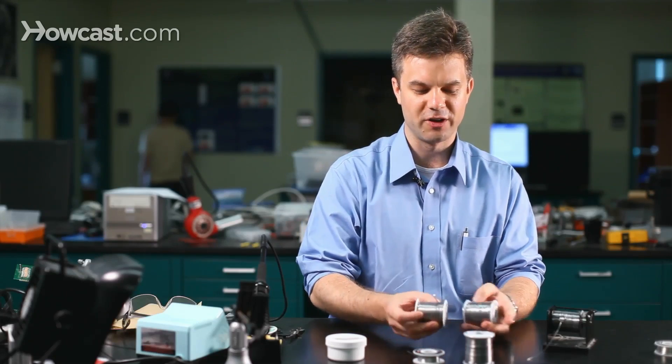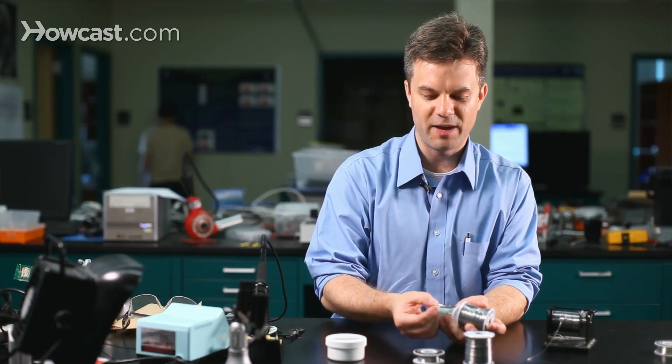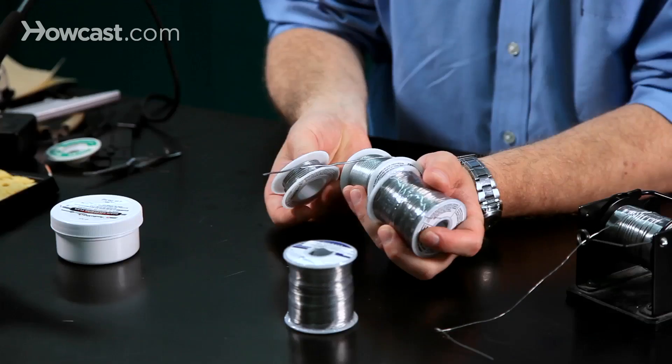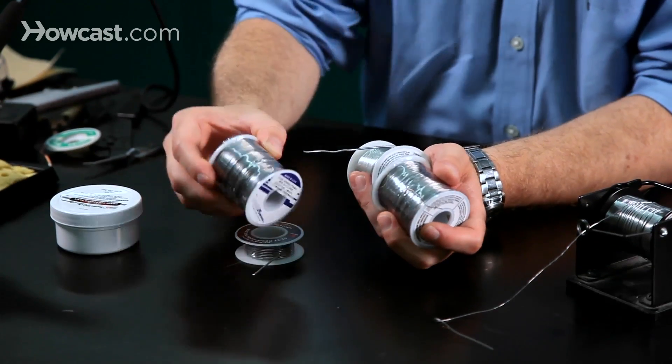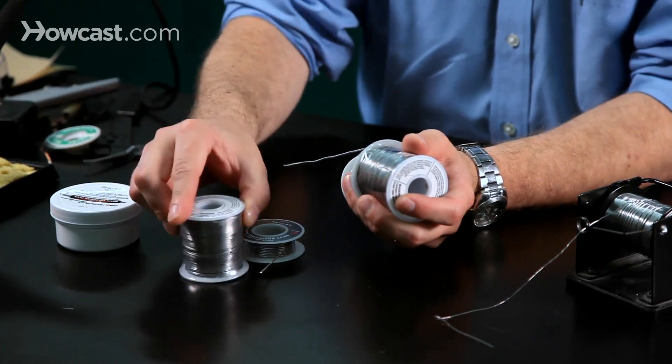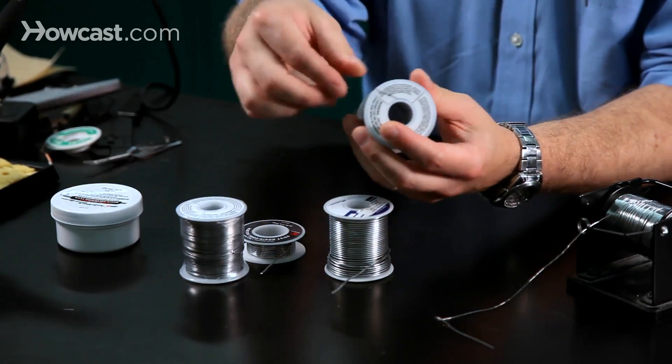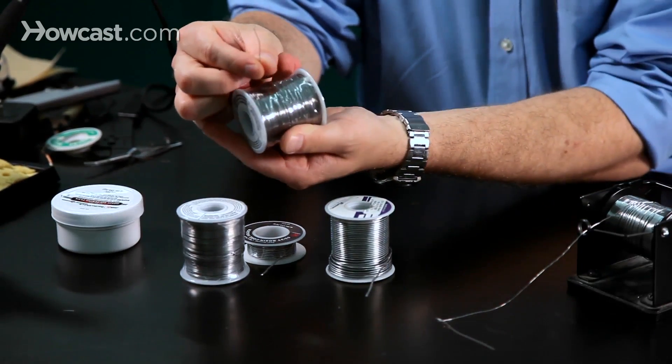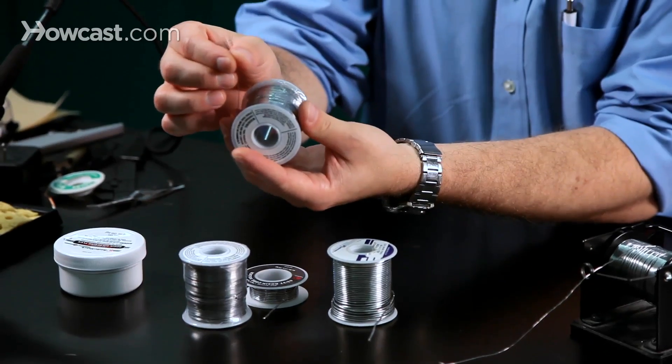Solder comes in a number of different gauges or wire diameters. This is a very heavy gauge here, smaller, smaller still, and finally, some very fine solder, which can be useful for very delicate work, such as surface mount devices.